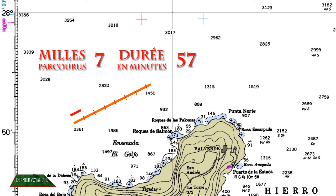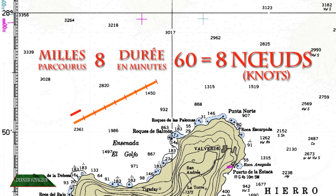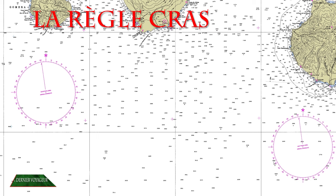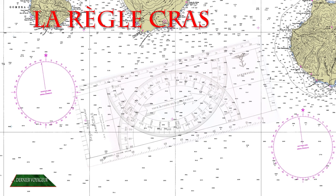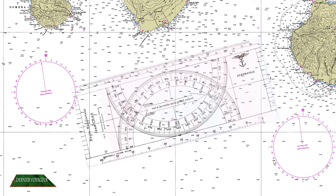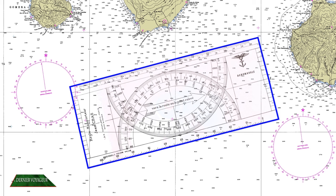Maintenant que nous connaissons le vocabulaire employé par les marins, nous allons voir deux outils importants en navigation. Pour tracer une route ou relever un cap sur les cartes marines, nous utilisons la règle CRA, du nom de son inventeur français, officier de marine, né à la fin du 19e siècle. C'est une règle rectangulaire, en plastique transparent, sur laquelle sont gravés deux demi-rapporteurs divisés en degrés.